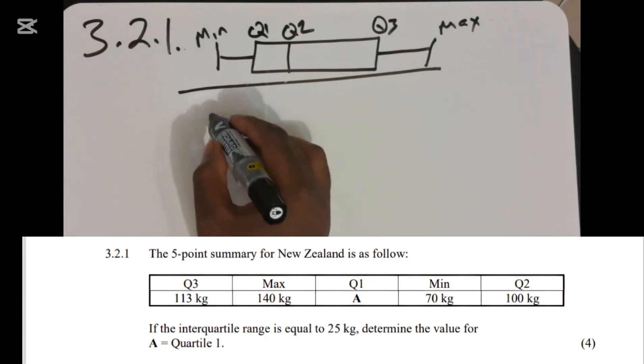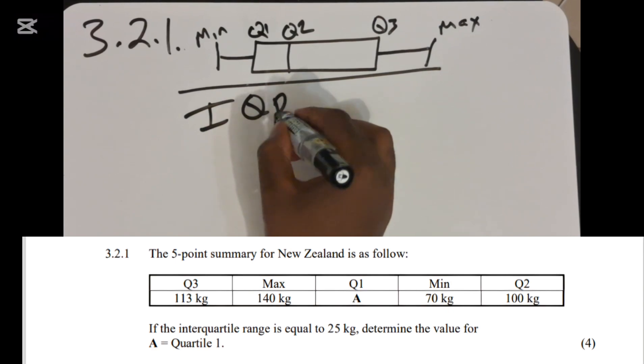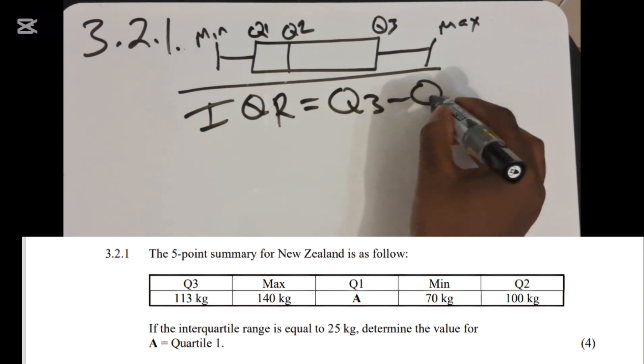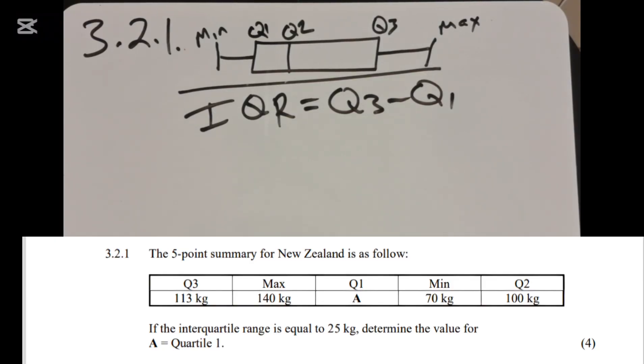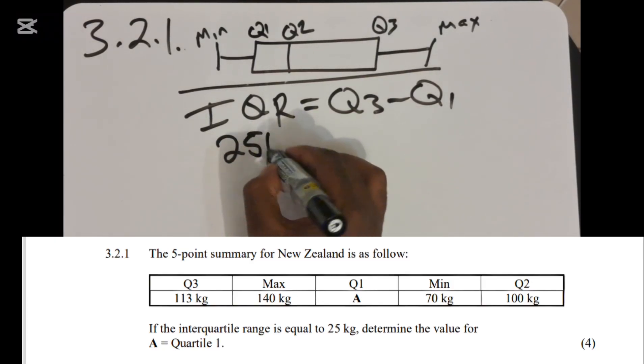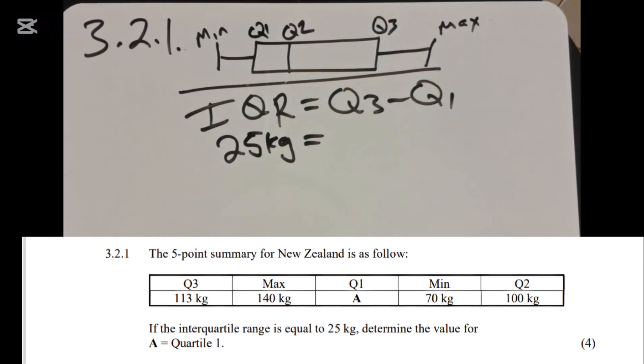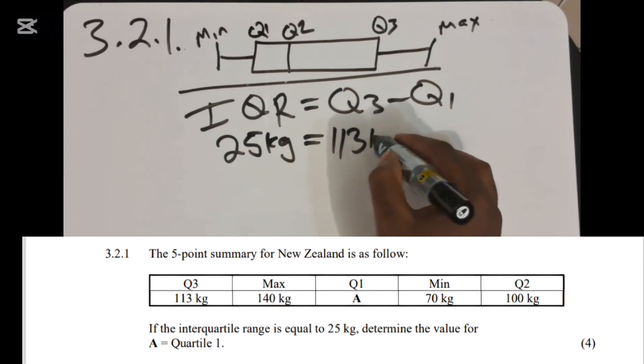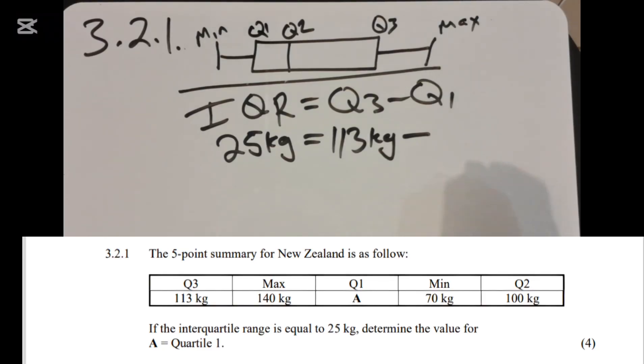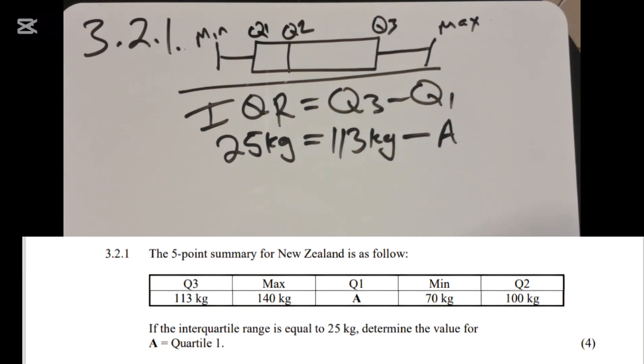So now they have given you the interquartile range. What we need to do is write the equation of the interquartile range. We know that interquartile range is equal to Q3 minus Q1. Q1 is equal to A. In other words, we must calculate the value of A.